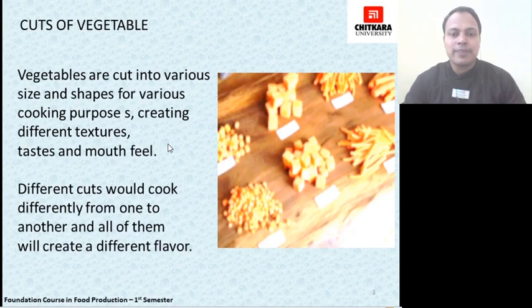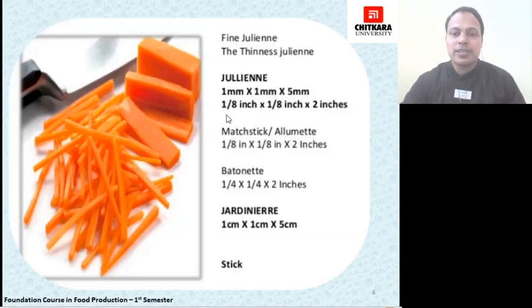Then comes the strip-like cut named julienne, which are thinly cut strips of a vegetable measuring 1mm x 1mm x 5cm, or 1/8 inch x 1/8 inch x 2 inches. The 1/8 inch depicts the width and side of the strips, and 2 inches is the length. Then comes the allumette, which is similar to julienne and also known as julienne in some parts of European countries. Its size is also 1/8 x 1/8 inch x 2 inches.